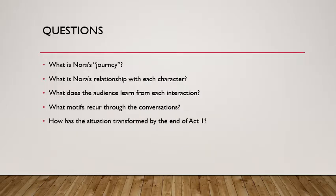Some questions to get us started: What is Nora's journey? Where does she begin and where does she end in this act — same physical place, of course, but as a character? What are the relationships we see between Nora and each character, and do we see any changes? What do we learn from each interaction about Nora, her life, and what might happen later in the play? What motifs — recurrent images, ideas, or themes — tie these four conversations together? And how is the situation transformed by the end of Act One for all the characters?